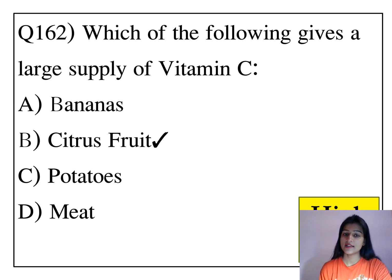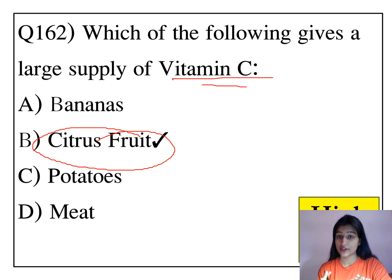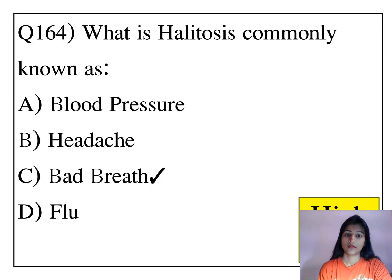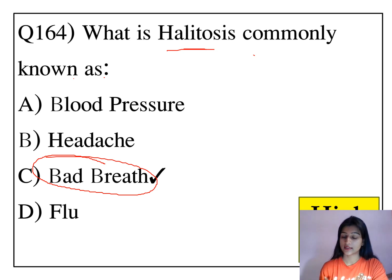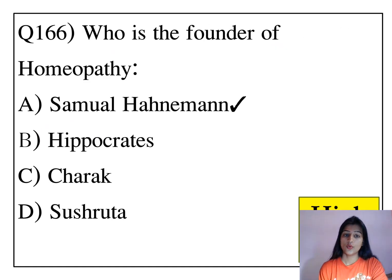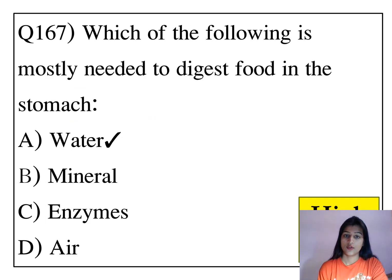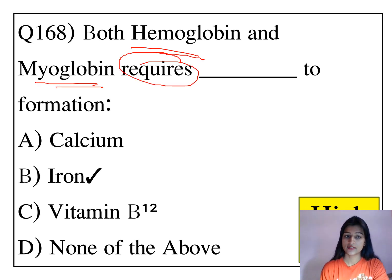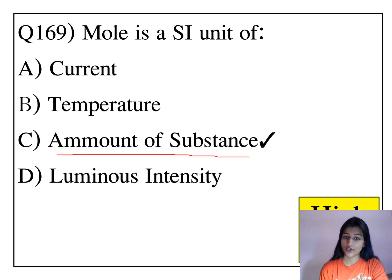Which of the following gives a large supply of vitamin C? Citrus fruit gives a large supply of vitamin C. The primary function of vitamin K is blood clotting. Heritosis is a disease related to the lung. Which of the following is mostly needed to digest food in the stomach? Water is highly required to digest food in the stomach. Both hemoglobin and myoglobin require iron for their formation.